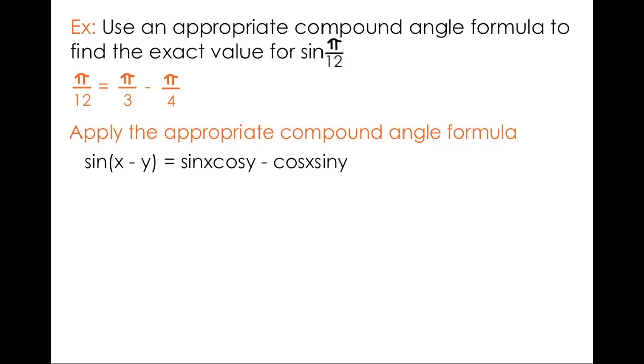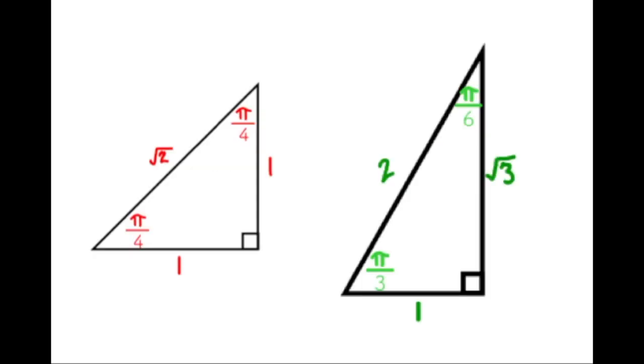So, this is the identity we're going to use. If I substitute pi over 3 and pi over 4 for x and y respectively in my compound angle identity, you'll see that you get a pretty messy expression. But remember, we picked special angles for a reason.